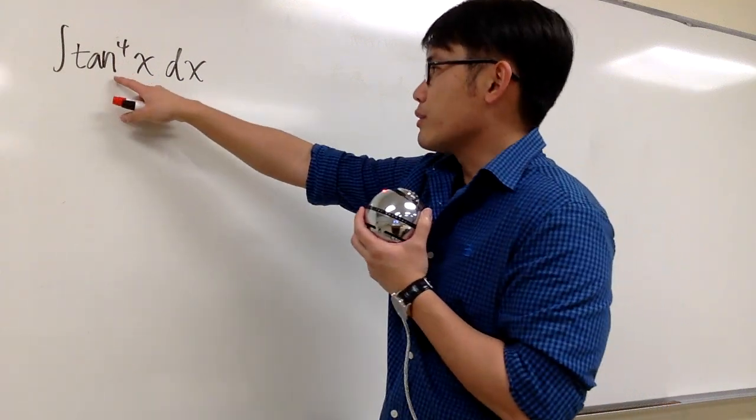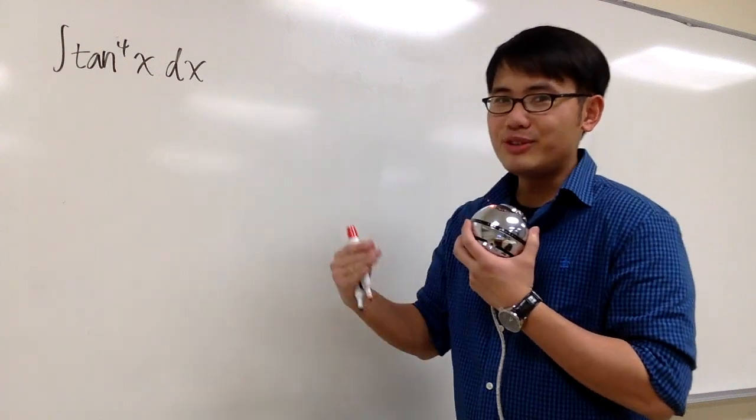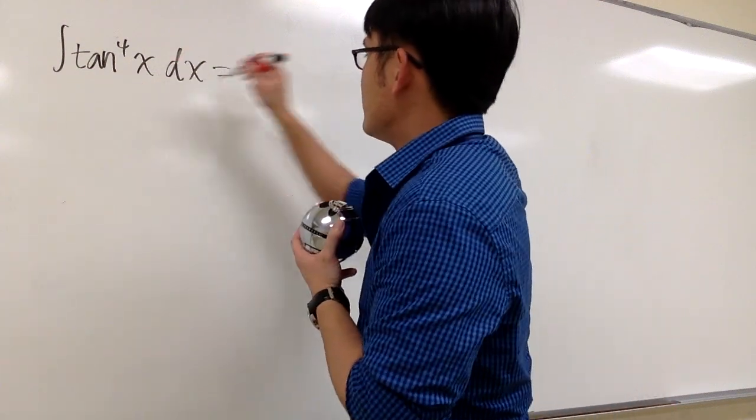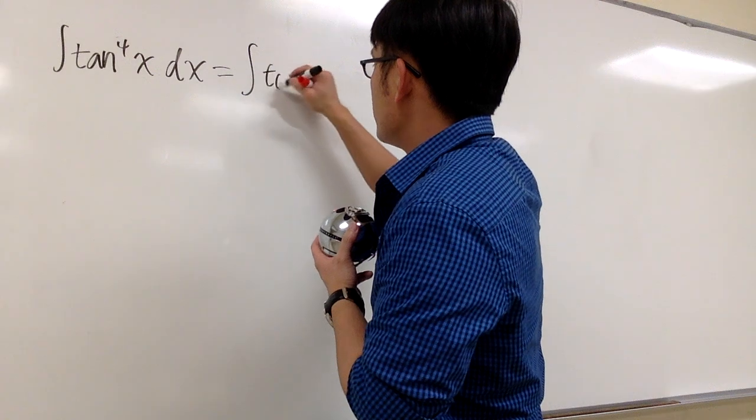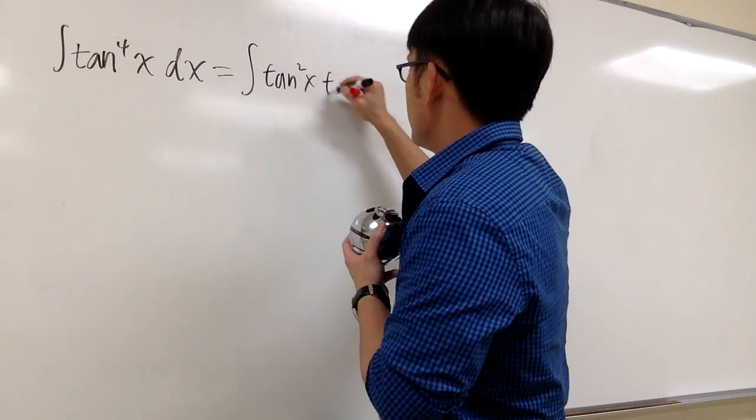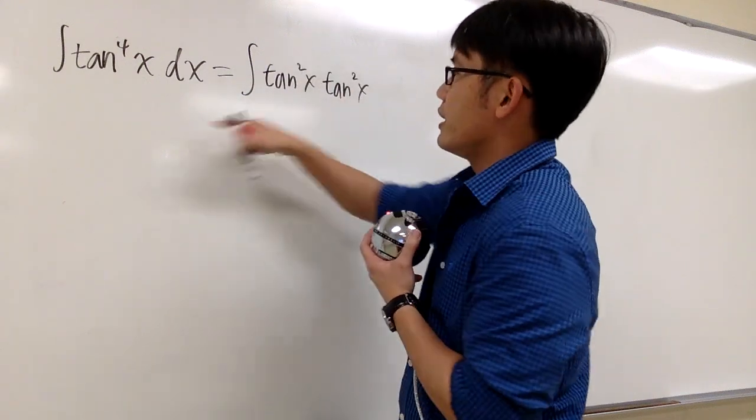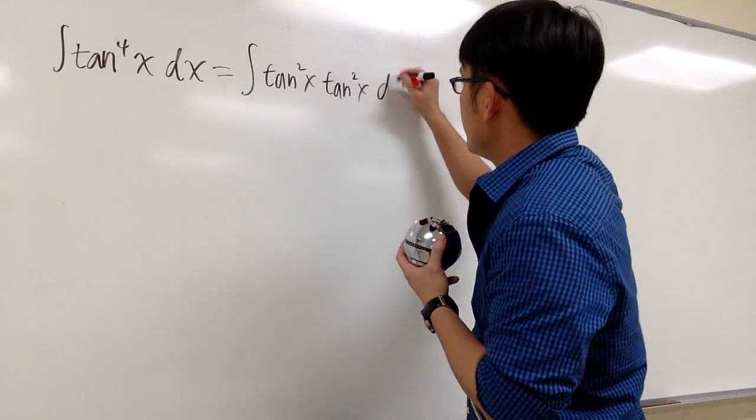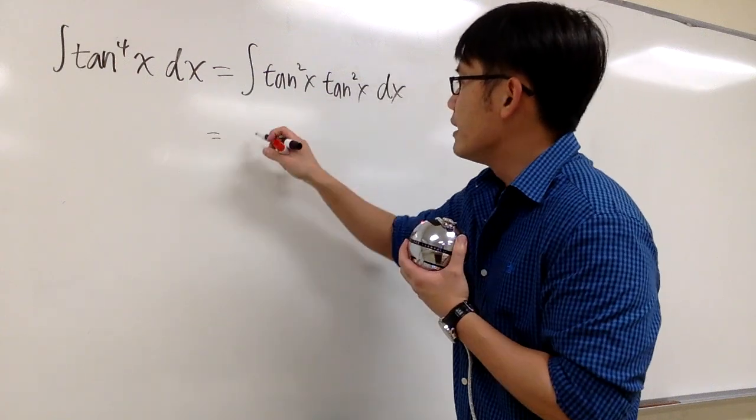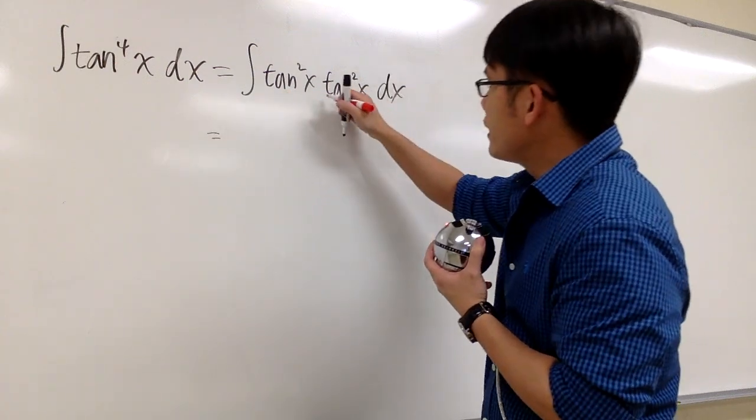So let's break down the tangent to the fourth power as tangent square times tangent square. This is the same as integrating tangent square x times another tangent square x, which altogether will be the fourth power, and then we still have the dx. Let's look at this integral, let's look at this tangent square.